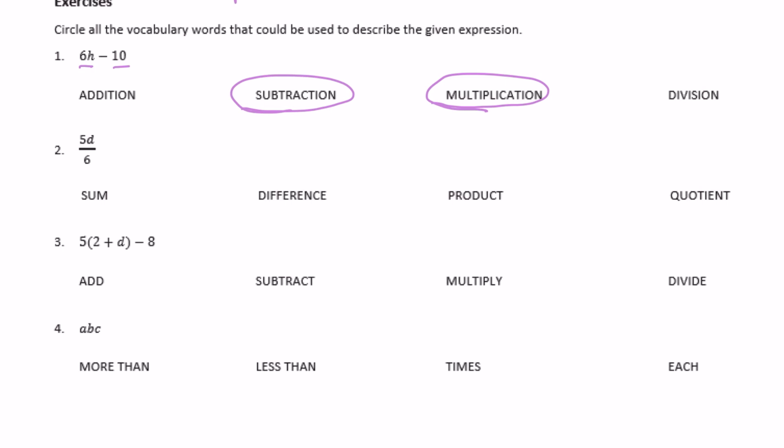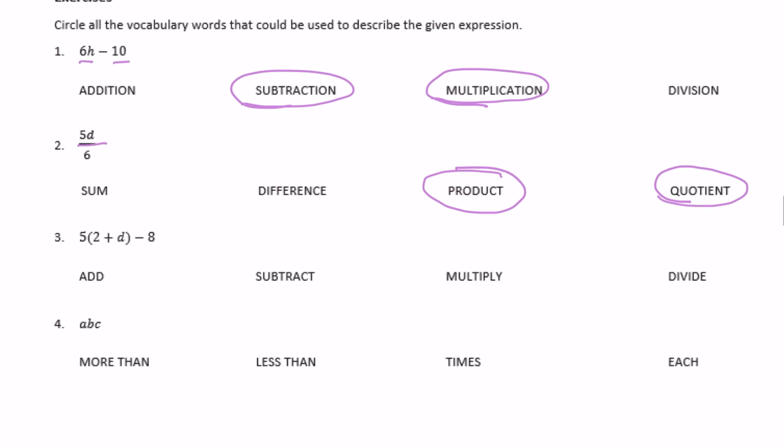Number 2. 5d so 5 times d, and they haven't just said add subtract multiply and divide here, so we need to know which one. Sum difference product or quotient means multiply, that would be product because product is the answer to a multiplication problem. And then we have over 6 which is divided by 6, so which word means divided by? That would be quotient.